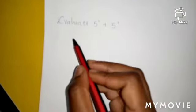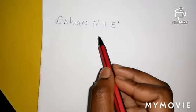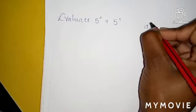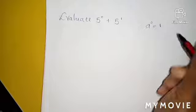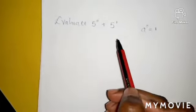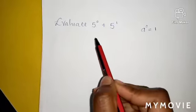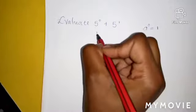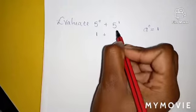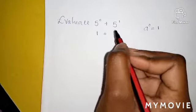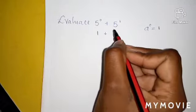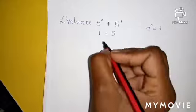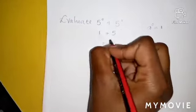The second question says evaluate 5 to the power 0 plus 5 to the power 1. We must always know that any number raised to the power 0 is equal to 1 — regardless of what it is. So 5 to the power 0 is 1. Plus, any number raised to the power 1 is the number itself. So 5 to the power 1 gives us 5. Therefore, 1 plus 5 is equal to 6.